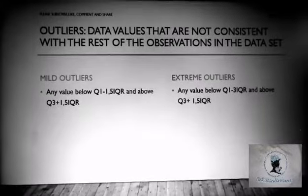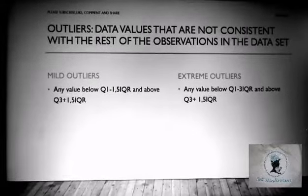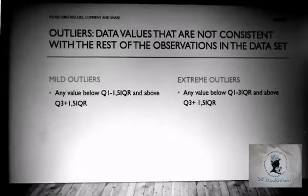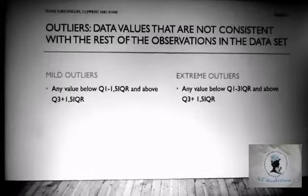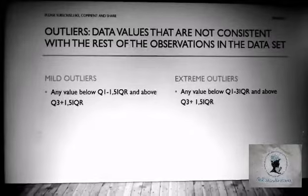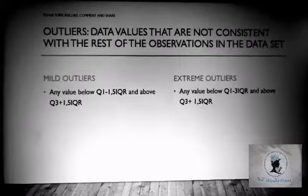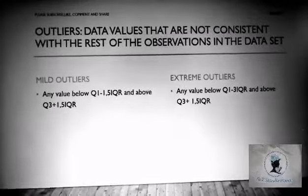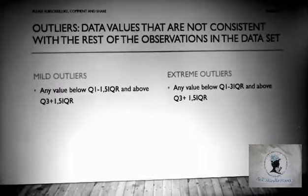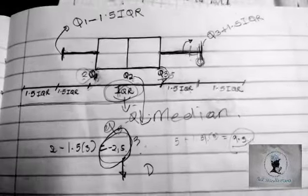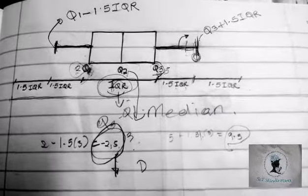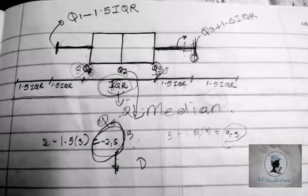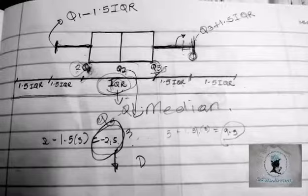Your mild outliers are any value below Q1 minus 1.5 IQR and above Q3 plus 1.5 IQR. Copy this down if you don't have it yet, and make sure you keep it somewhere visible, because when I show you how to represent them on the box and whisker plot you'll need to refer back to it and check that it makes sense.